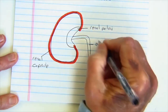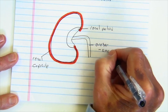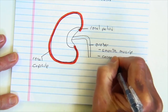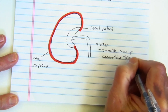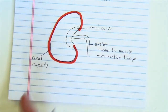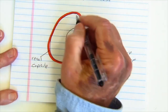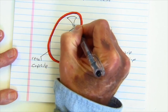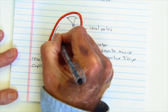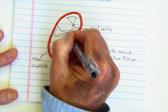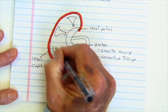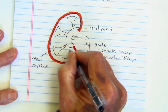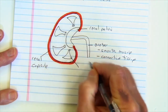Think of the ureter as really comprised mainly of smooth muscle and connective tissue. If I did a fillet of a kidney, I'd see structures that are triangular in nature — therefore they're called pyramids. We'll put four of these renal pyramids inside of the kidney.